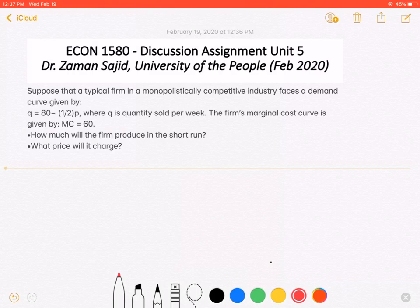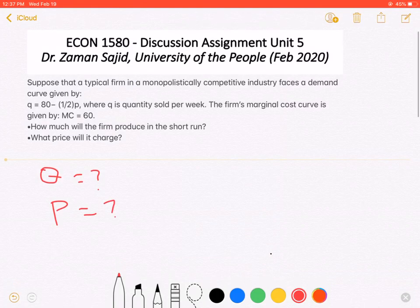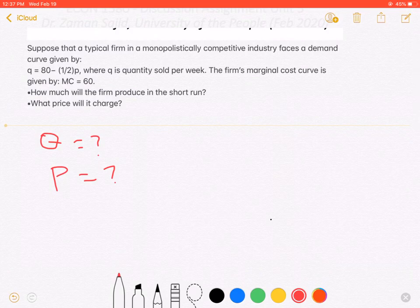Now what are the objectives here? We need to find out the value of Q. How much will the firm produce in the short run? And we also need to find at what price they are going to sell it. Now before we go into its solution details I just want to give you some background.